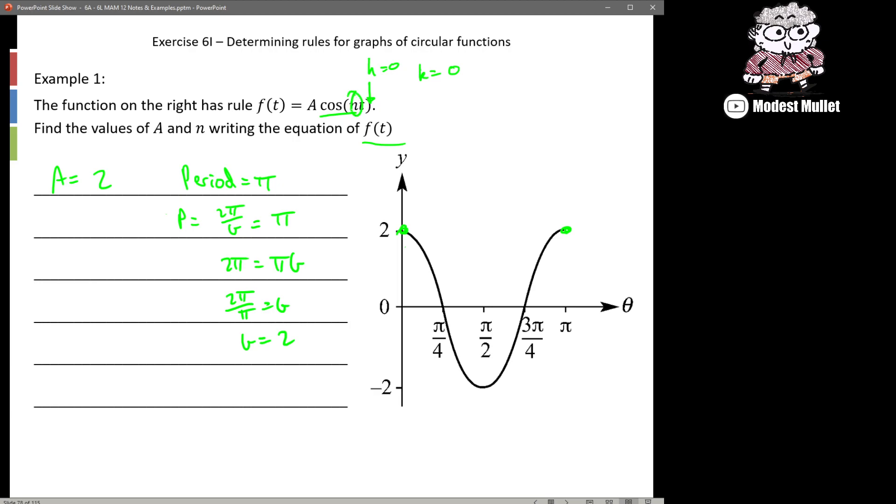And in that case that is actually technically the n value so we can finish easy as that where f(t) is equal to a being the amplitude which is 2. The graph is not reflected so it's just a positive 2, it's not a negative 2. And then we get cos(2t). And that's it.